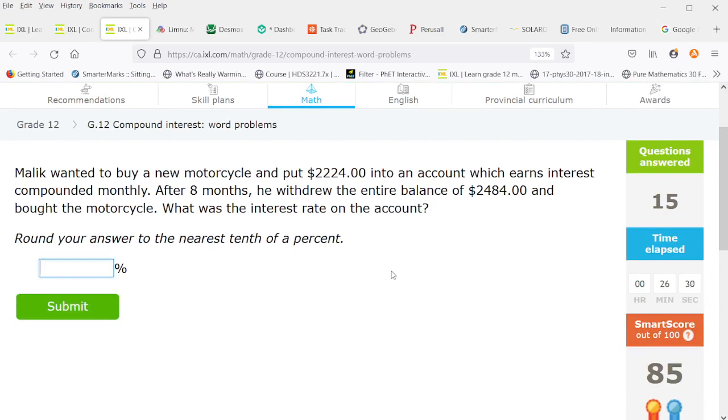So Malik wanted to buy a new motorcycle and put this into an account. So again it's another interest rate and there's eight periods. So we take the eighth root of 2484 divided by 2224. We multiply that by the 12 months, subtract 12, and we end up with a 16.7 percent interest rate.